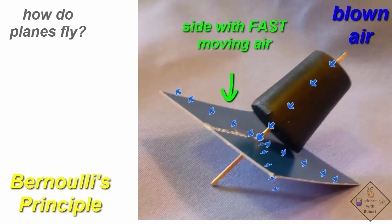When Dr. Smith blows through the tube, the blown air moves very quickly along the top side of the paper. So the air on the top side of the paper is moving faster than the air on the bottom side of the paper.